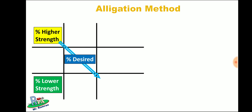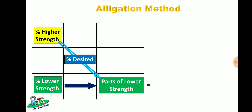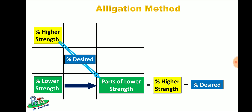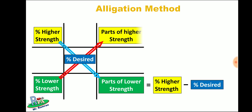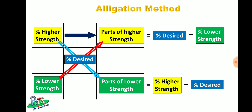Now start the calculation by subtracting percent desired from percent of higher strength — this gives parts of lower strength. So: parts of lower strength = percent of higher strength minus percent desired. Similarly, parts of higher strength = percent desired minus percent of lower strength.